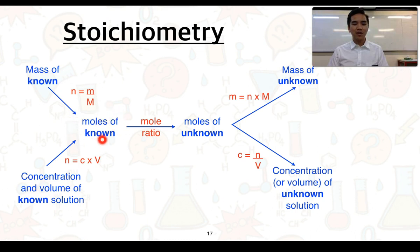So we've got the number of moles of our known. We then use the balanced chemical equation and we look specifically at the mole ratio to then determine what the number of moles of our unknown, our product in this case, would be. From there, we might need to then work out the mass of our product. So we go ahead and work out the mass by using the formula M equals N times big M.